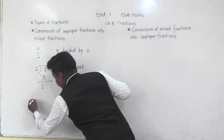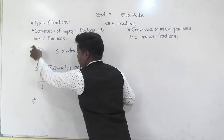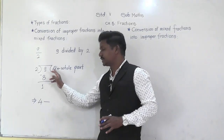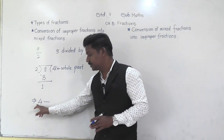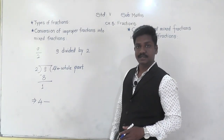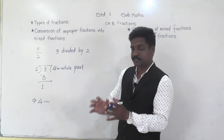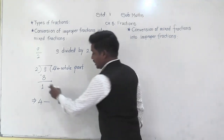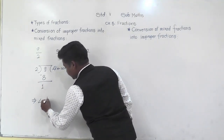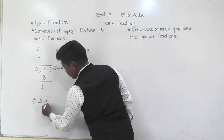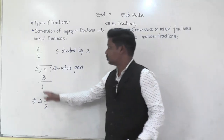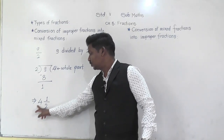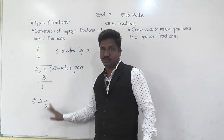So the whole part is 4. In the fractional part, write the remainder in the numerator and the divisor in the denominator. So 9 by 2 as an improper fraction converts to the mixed fraction 4 whole 1 by 2. Let us take another example: 15 upon 4. This is an improper fraction because numerator is greater than the denominator. So we convert it into a mixed fraction by dividing 15 by 4: 4 threes are 12, remainder is 3, quotient is 3. So the mixed fraction is 3 whole 3 upon 4.